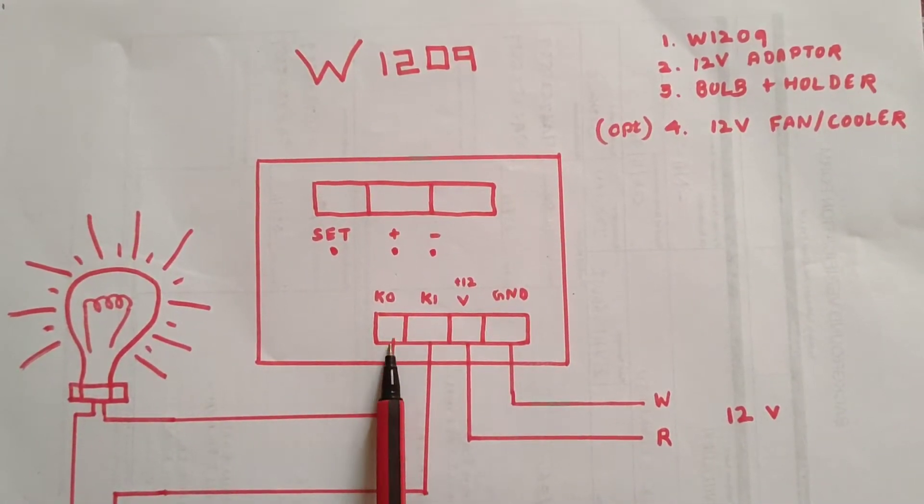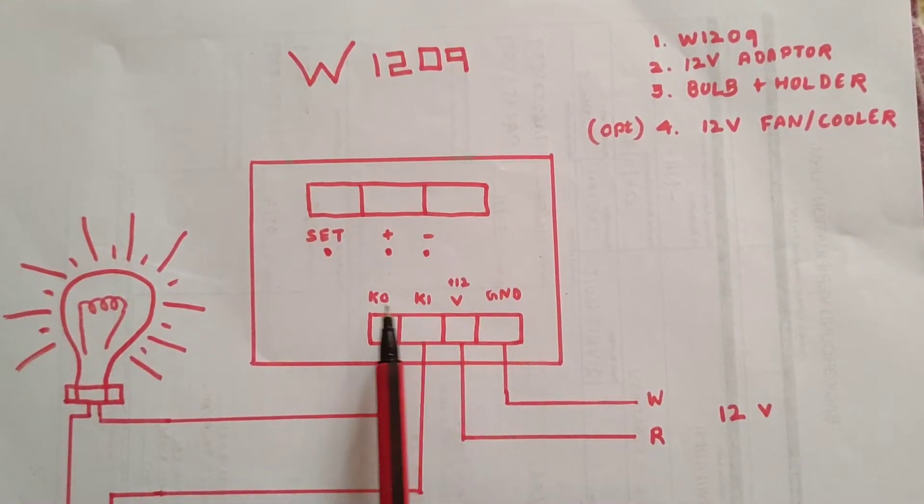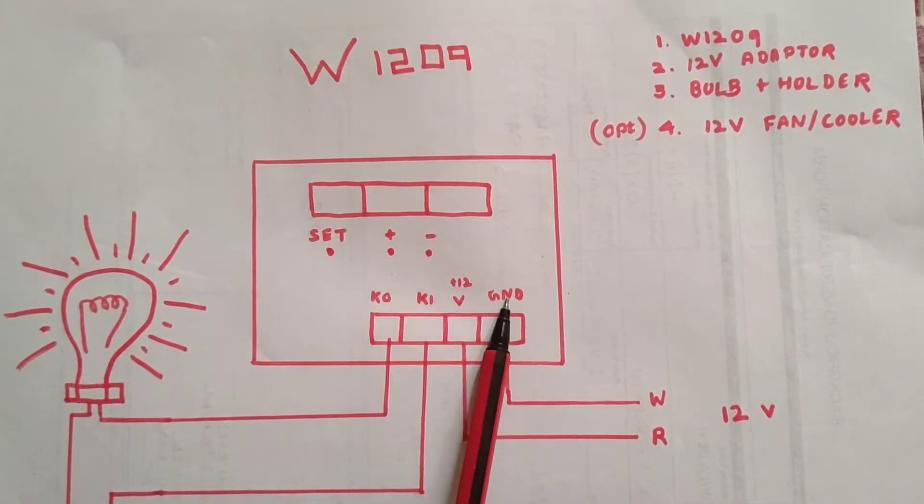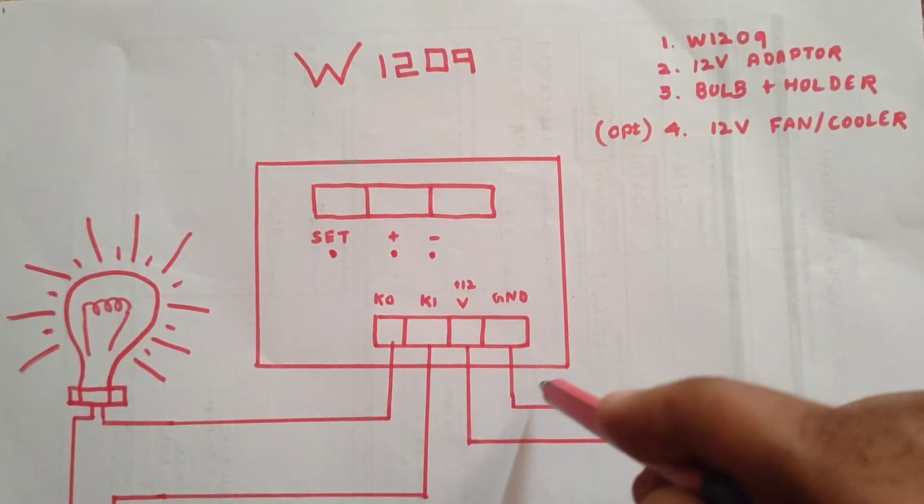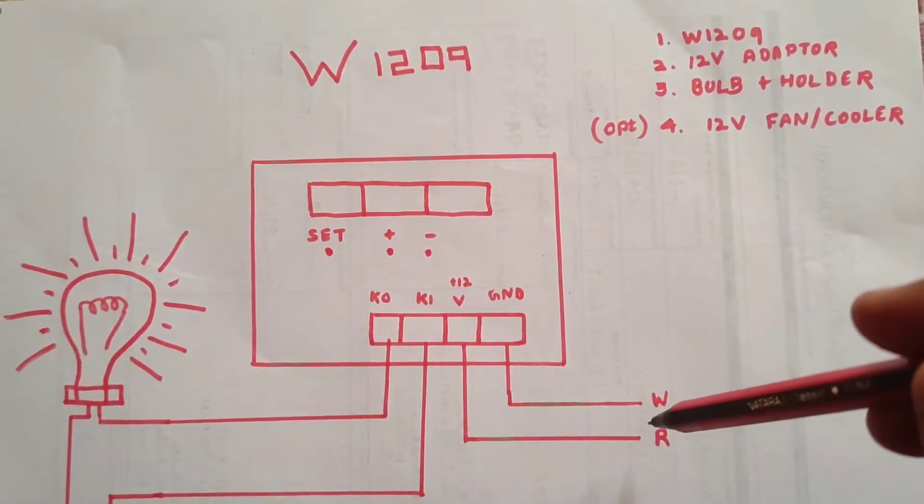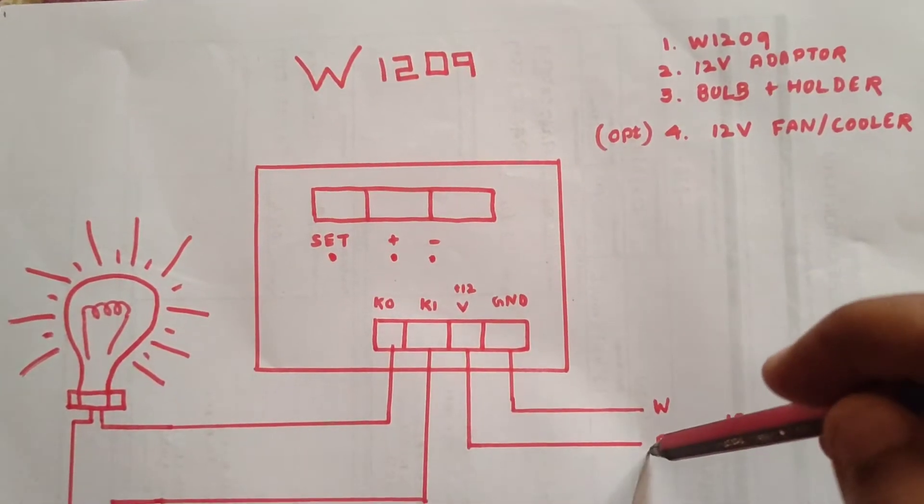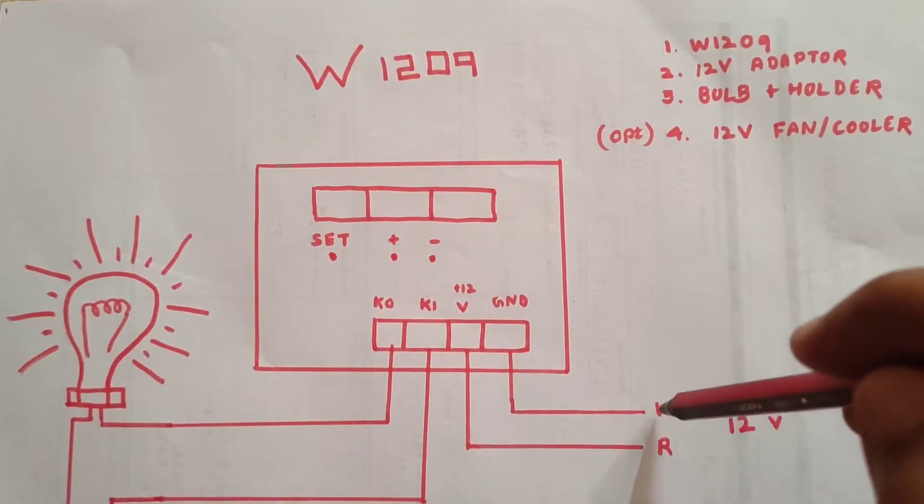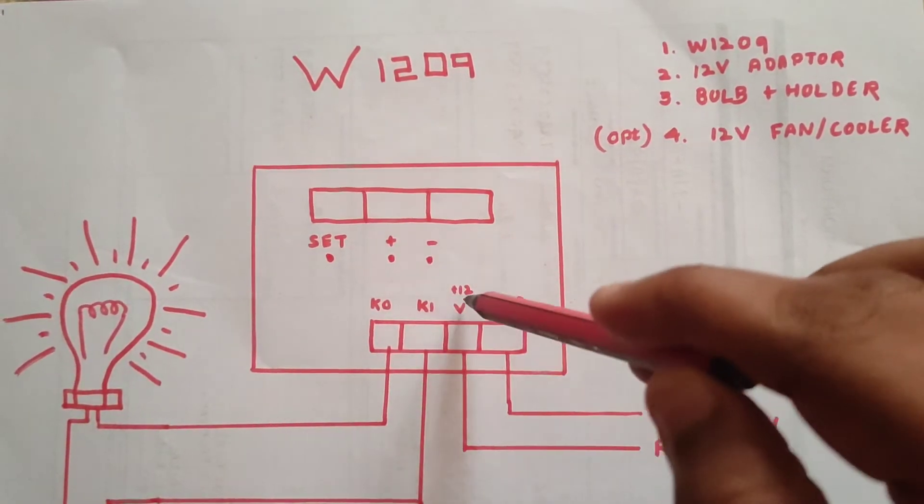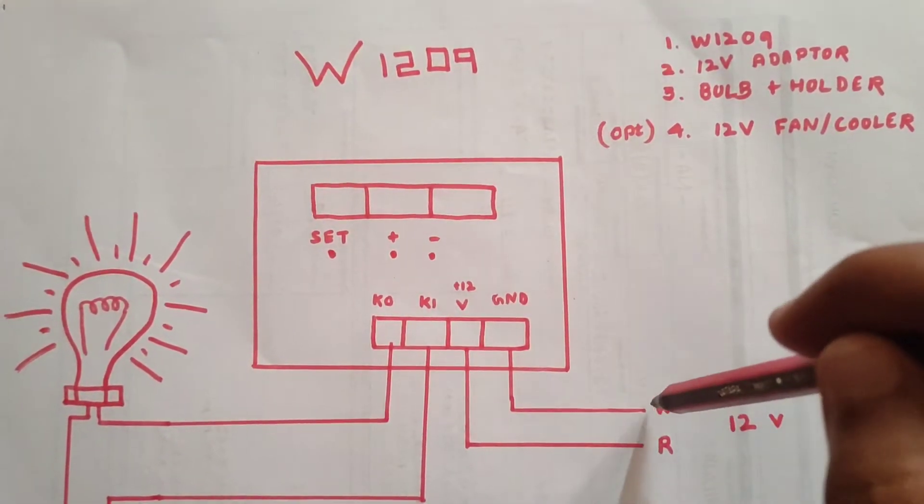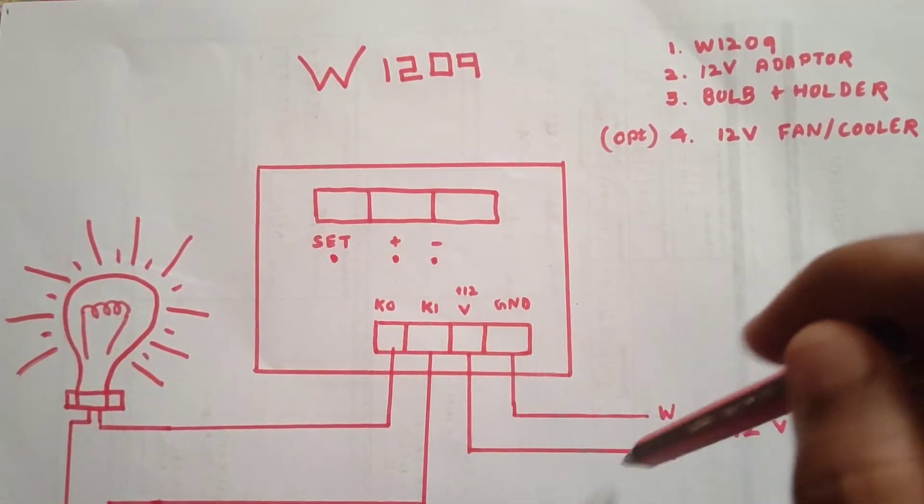This is K0, K1, and 12V ground. This is how we connect the circuit diagram. First, the adapter has a red wire and black wire. Red wire is 12V, black wire is ground. That's the adapter connection.